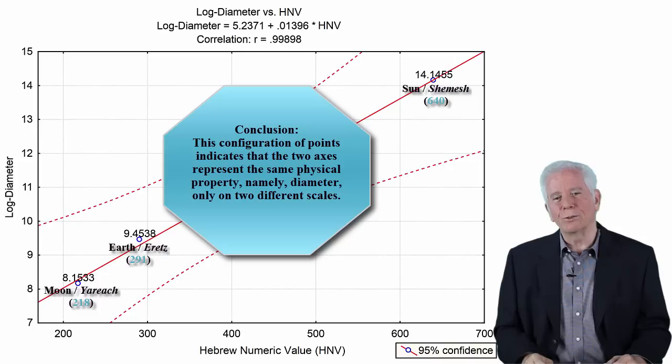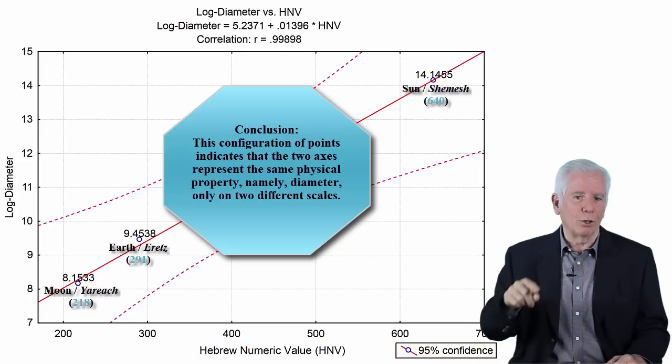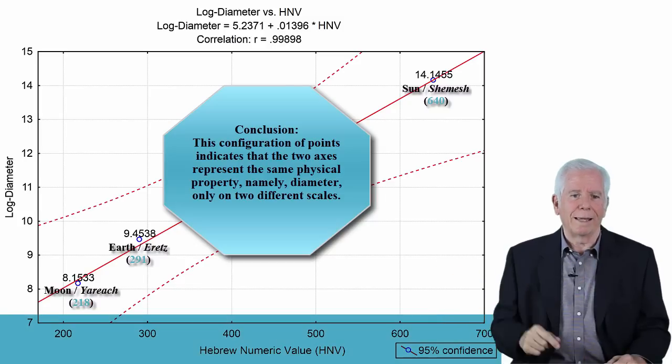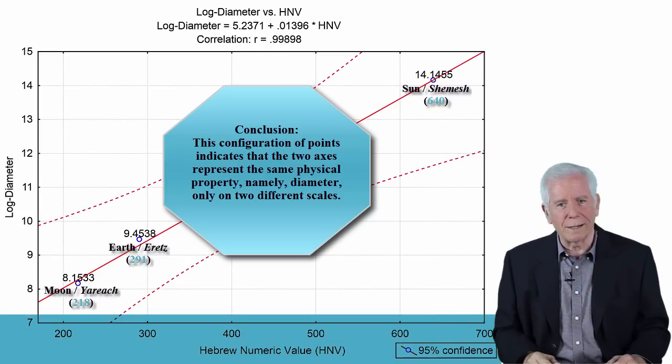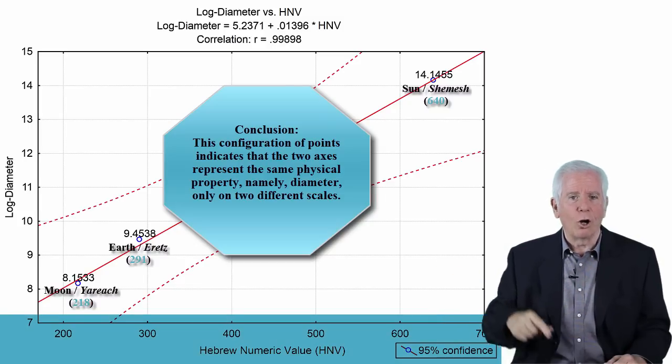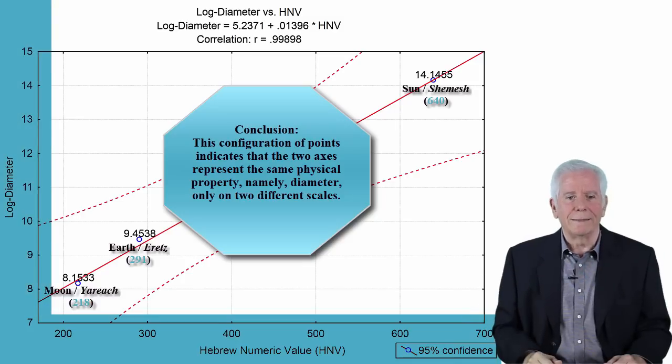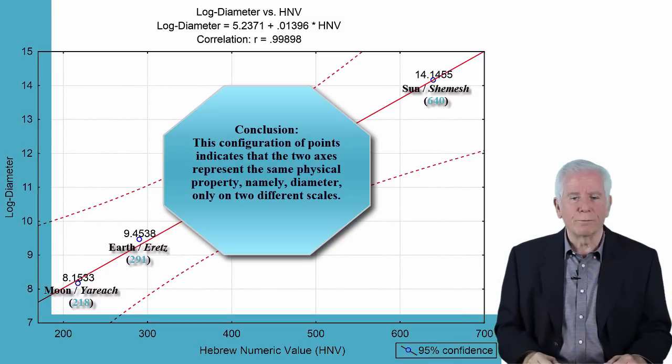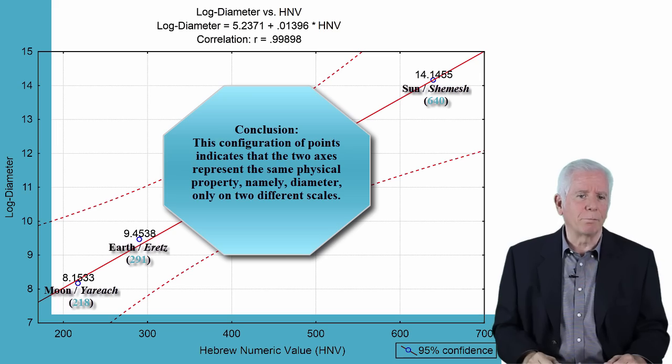Only on two different scales. On the horizontal axis, the Hebrew numerical value scale, HNV scale. On the vertical axis, the scientific scale representing actual physical measurements as submitted, for example, by NASA.